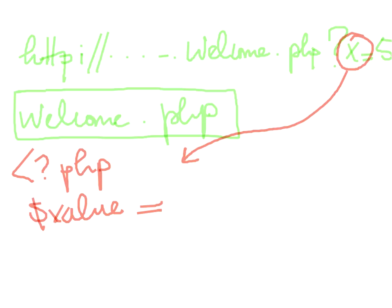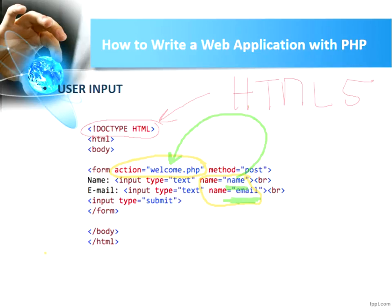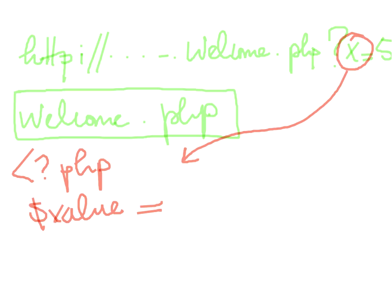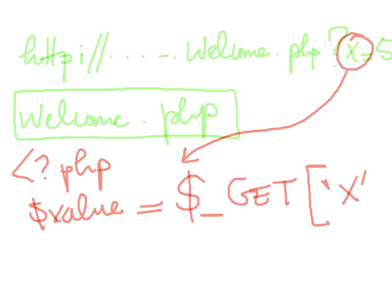In PHP code, to get the value of x from a GET request, we write '$_GET["x"]'. To get the value of 'name' or 'email' from a POST form, we write '$_POST["name"]' or '$_POST["email"]'.